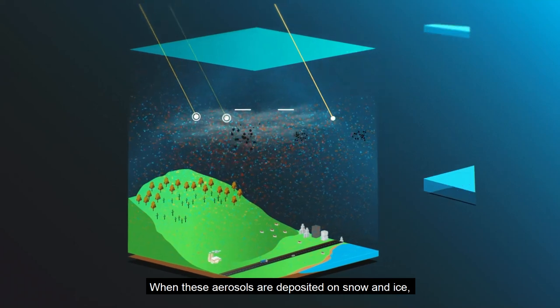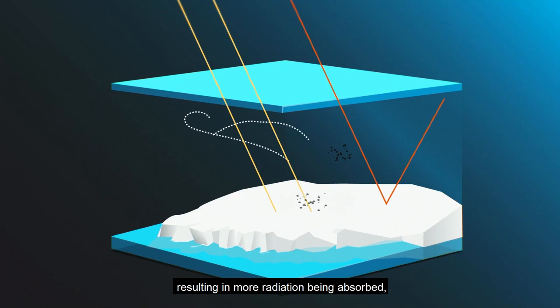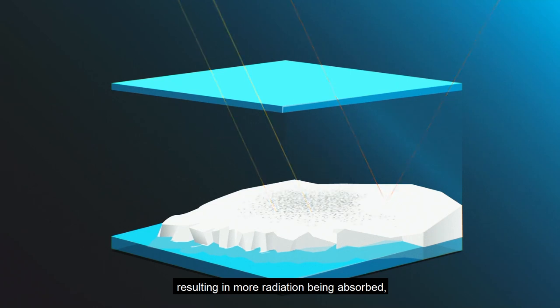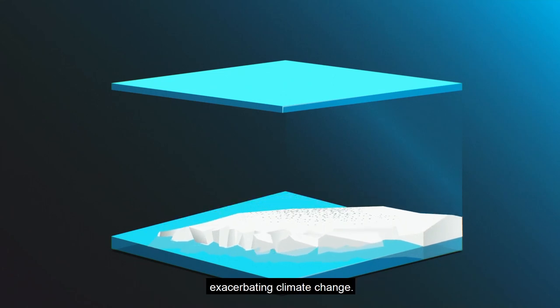When these aerosols are deposited on snow and ice, they darken their surfaces, resulting in more radiation being absorbed, leading to warmer temperatures and melting snow, exacerbating climate change.